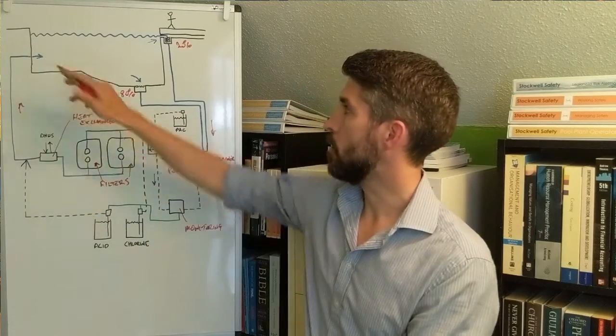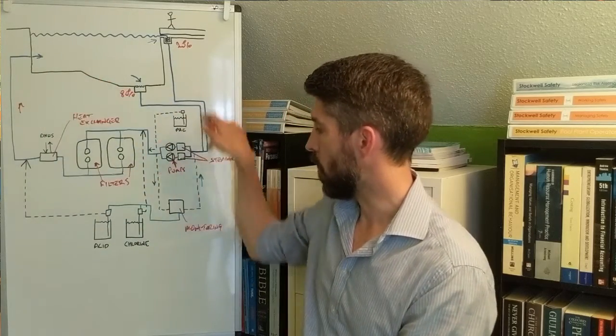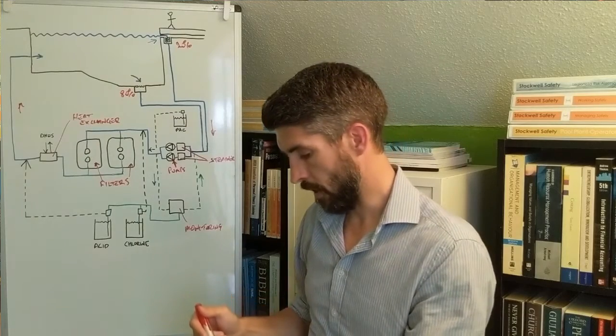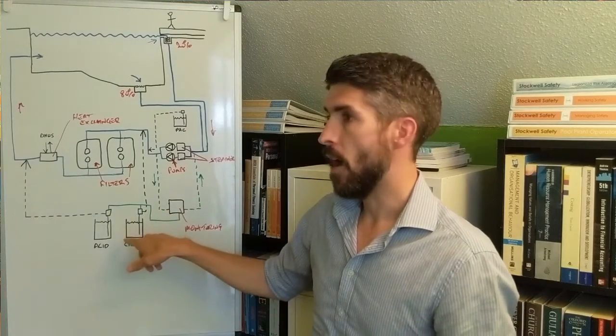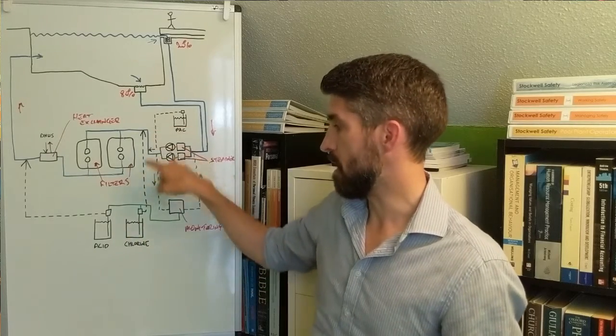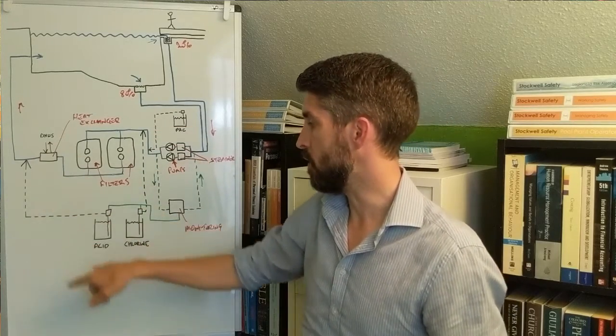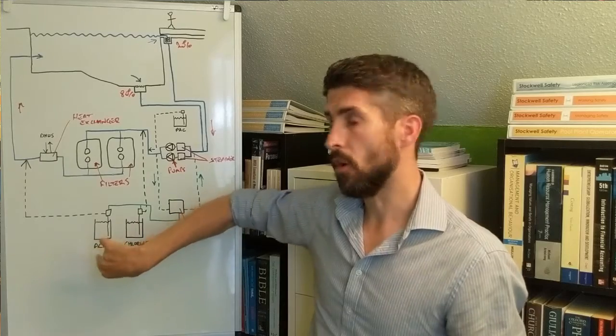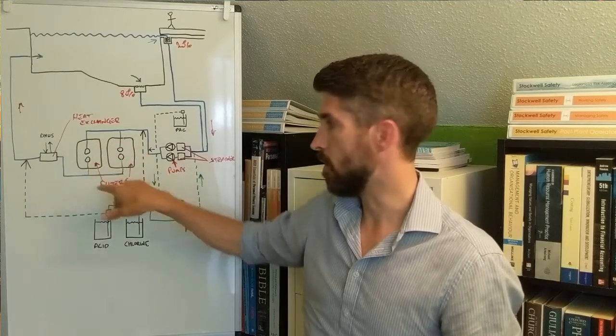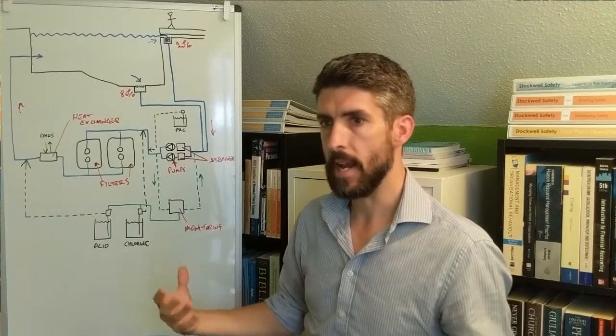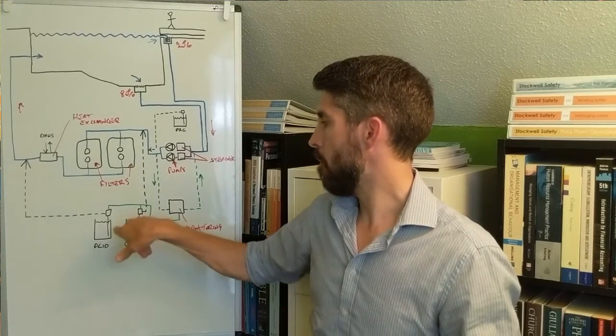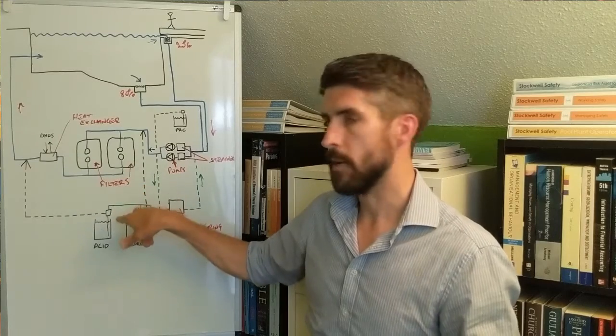The acid is usually the final thing to be dosed into the system prior to it going back to the pool. So it's a complete circuit. It's very important, I think, for pool plant operators to be aware of where the chlorine is being dosed and where the acid is being dosed, because if you get those two mixed up, even in the pipework, there's been incidents of chlorine and acid being combined in the pipework and creating a chlorine gas incident.